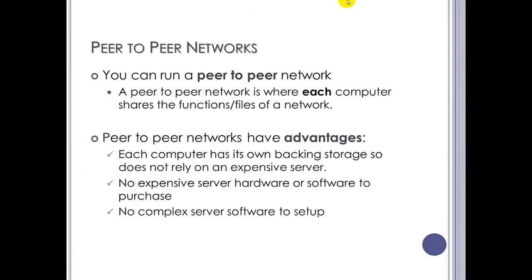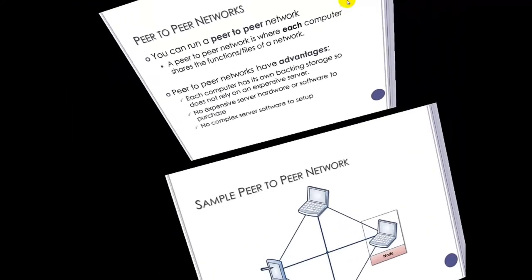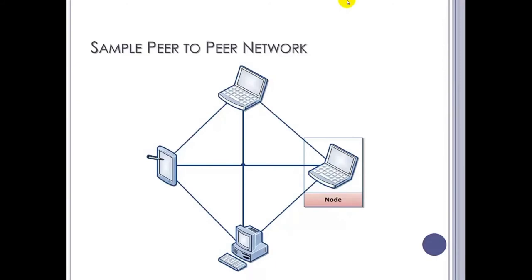A peer-to-peer network is when you don't have a central server — just a large collection of machines connected together. Peer-to-peer networks do have their own advantages: there's no expensive server hardware and no difficult server software to set up, so cost-wise it can be cheaper. In a peer-to-peer network all the machines are connected together with no central server controlling anything. A slight disadvantage is that it can be very difficult to control security, but you don't have the expense or technical know-how required for a server-based setup.